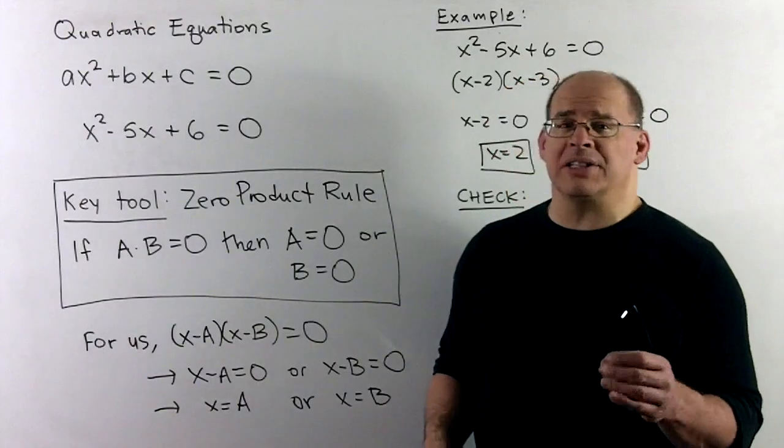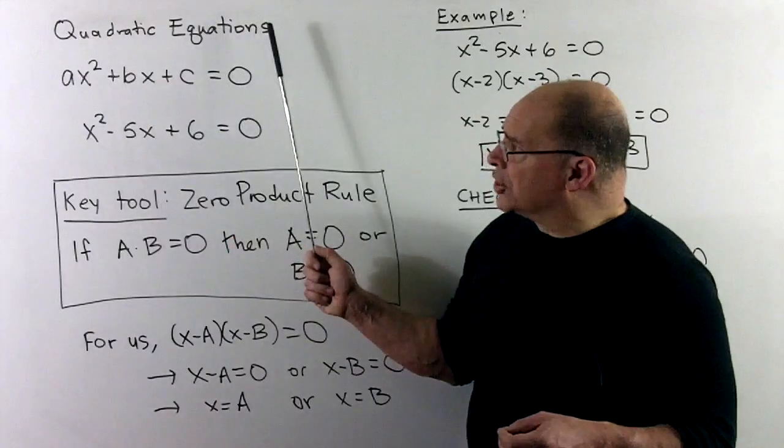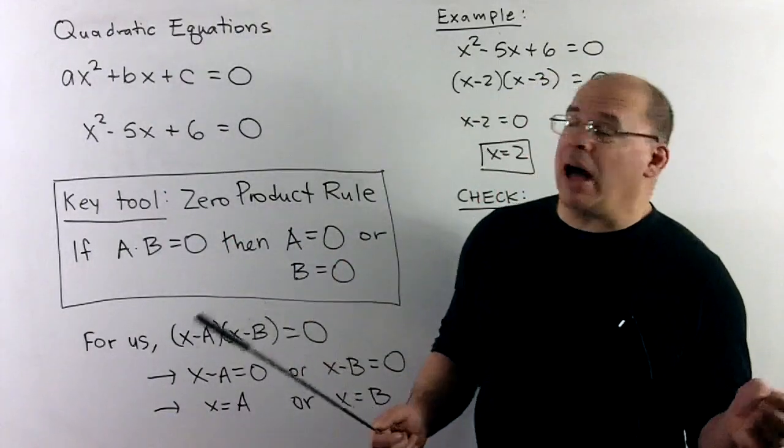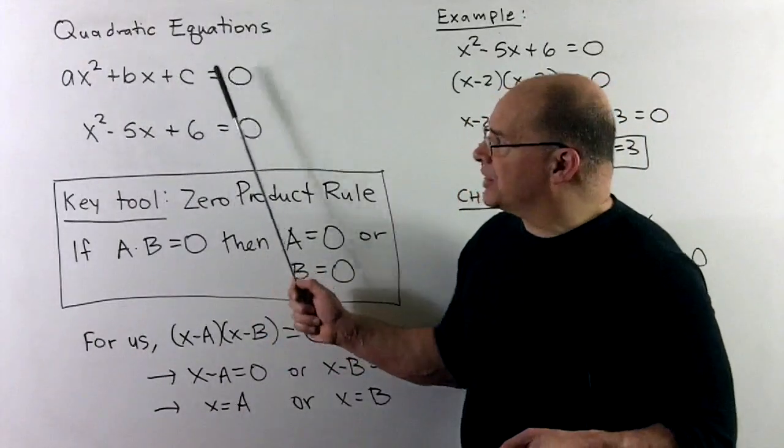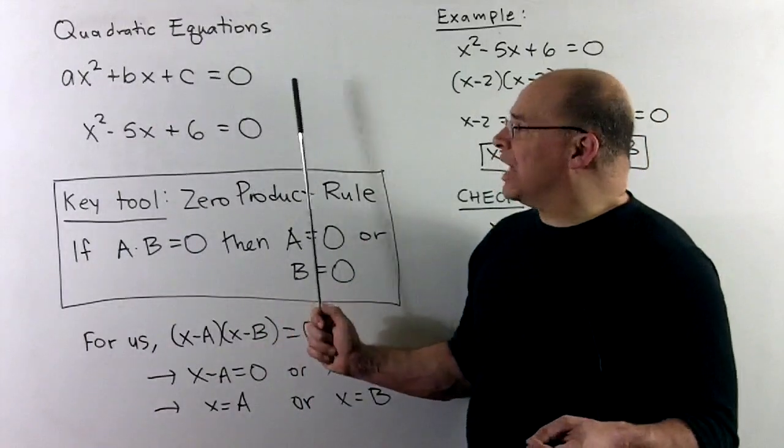We now apply our factoring theory to solve a new set of equations. We call these quadratic equations. These are going to be in the form, recall, quadratic polynomial is in the form x squared plus bx plus c. To get a quadratic equation, we take one of these and set it equal to zero.